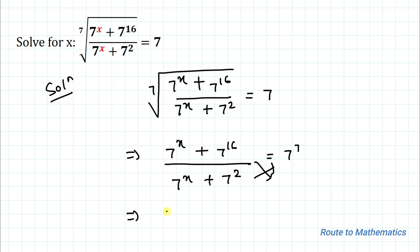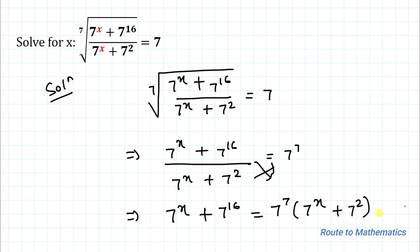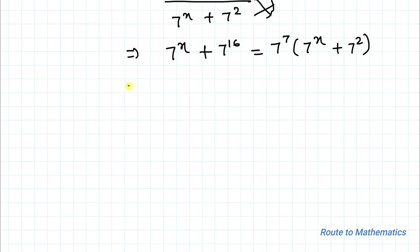Now in the next step I will cross multiply. By cross multiplication we have: 7 to the power x plus 7 to the power 16 equals 7 to the power 7 multiplied by 7 to the power x plus 7 squared. This implies: 7 to the power x plus 7 to the power 16 equals...